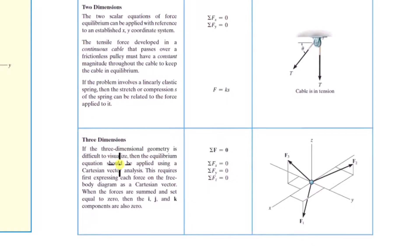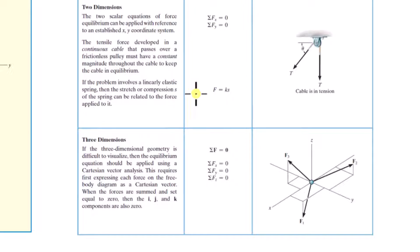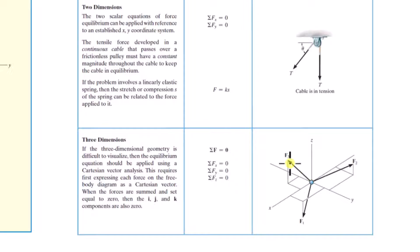If the three-dimensional geometry is difficult to visualize, the equilibrium equations should be applied using a Cartesian vector analysis. This requires expressing each force on the free body diagram as a Cartesian vector; when the forces are summed and set equal to zero, the i, j, and k components are also zero. Three dimensions is the exact same analysis as two dimensions — just a little more complicated because you have an extra component. Next, we're going to work a bunch of example problems on particle equilibrium.